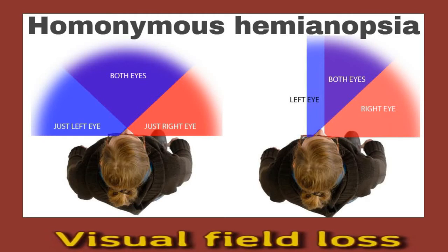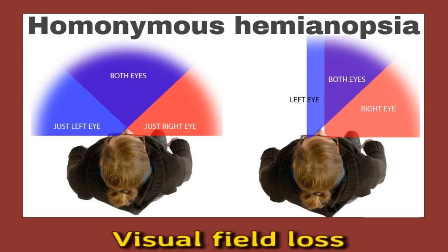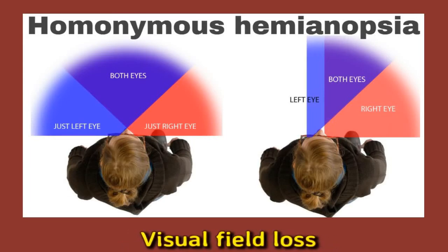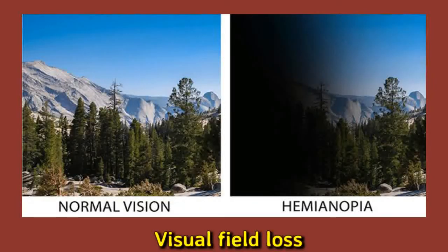The visual field includes any direct objects straight ahead as well as everything around them and to the sides. If a person experiences a visual field loss, they will lose the ability to see part of this field of vision. The type of field loss will depend on the area of the brain that the stroke affected. Visual field loss may occur on one side in each eye, so that a person can only see on the left or right side. This type, the most common following a stroke, is called hemianopia, and training may be necessary to help the person cope.